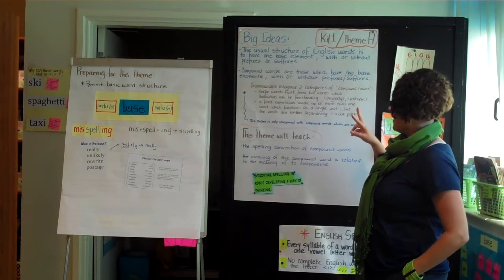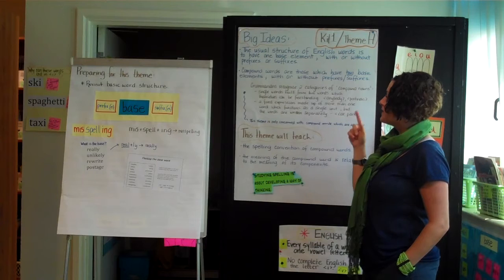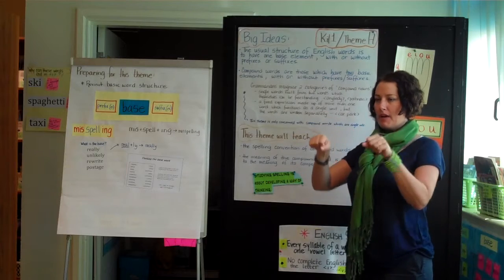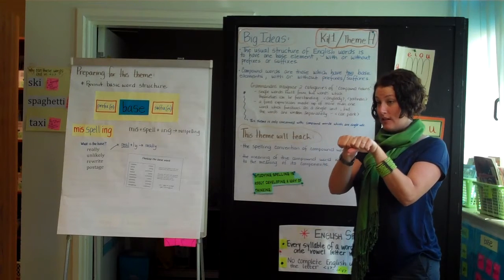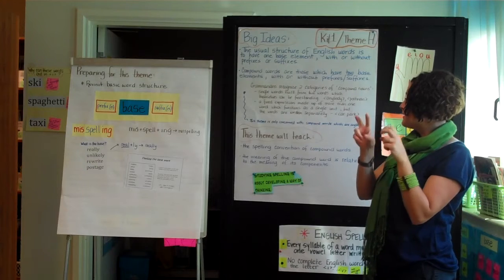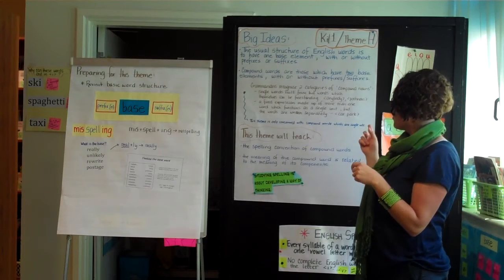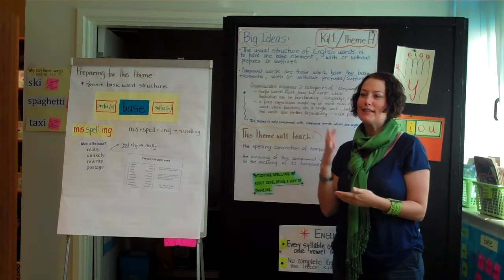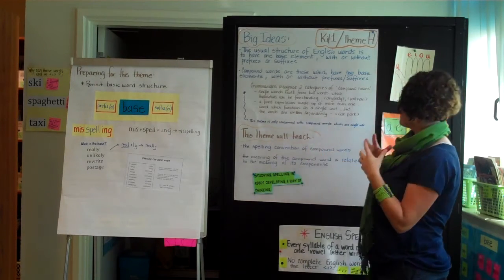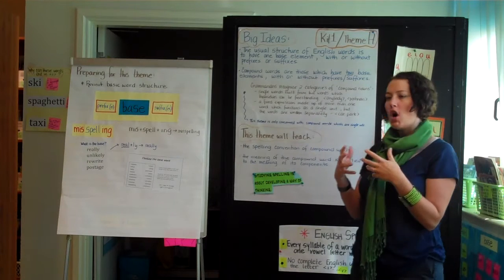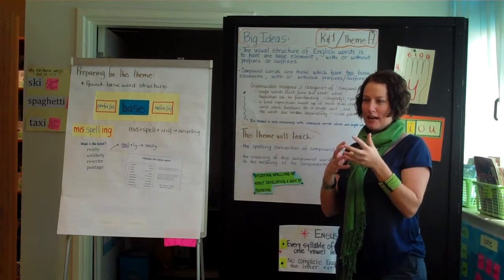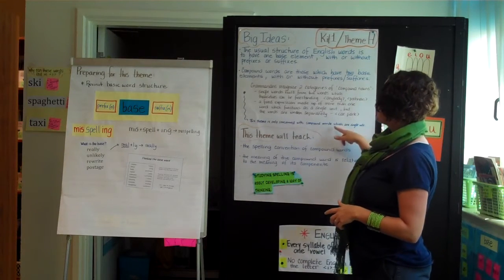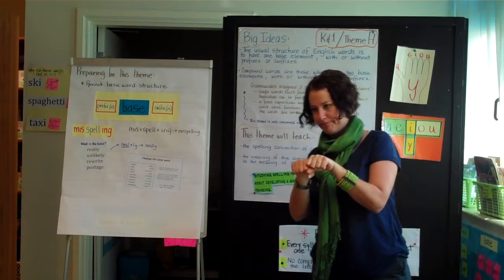Grammarians recognize two categories of compound nouns. There are single words built from two words which themselves can be freestanding — like 'anybody,' which is 'any' and 'body' put together. There's also a fixed expression, where the words are written separately but said together all the time, so they could practically be considered a compound — but it's more like a phrase or an expression. Car park, for example. This theme is concerned with the compounds that are hooked together.